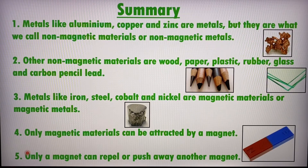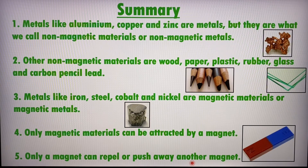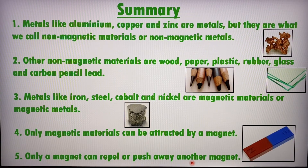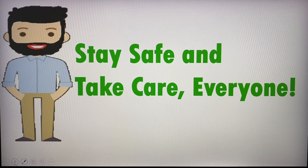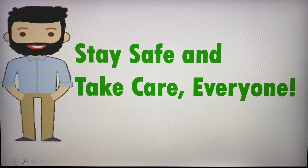My last and final point: only a magnet can repel or push away another magnet. This is very important. If you're doing a simple experiment and they repel each other, it is a magnet — the unknown object has to be a magnet because of the repulsion interaction occurring. This has been an introductory lesson on magnets and magnetic and non-magnetic materials. I hope everyone enjoyed this lesson. Goodbye everyone, take care and stay safe, and thank you so much for watching.